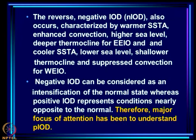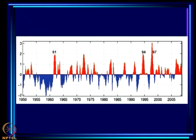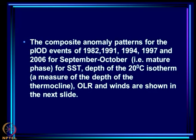This is why positive IOD events are special — much like El Niño, they represent a major reversal of the mean gradients. Negative IOD is just an intensification of climatology. The Dipole Mode Index shows positive events in 1961, 1994, 1997 (a very large event), and 2006 as notable positive IOD events in recorded history.